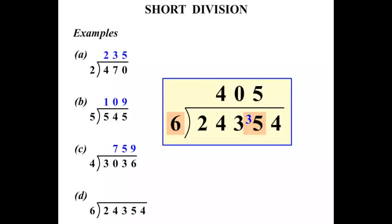5 sixes are 30. So we've got 5 left over. And finally, 6 into 54. 9 times exactly. So our answer there, 4059.